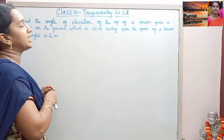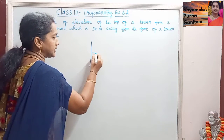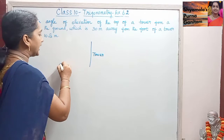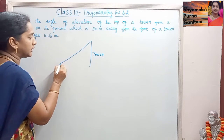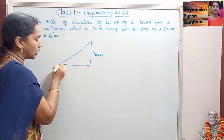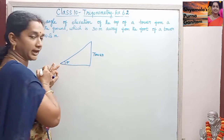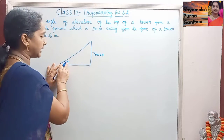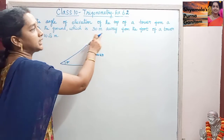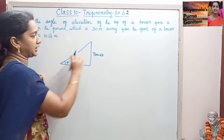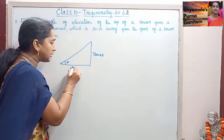So here, we need to find the angle of elevation of the top of a tower. A tower is there, and we are asked to find the angle of elevation from a point on the ground — I am taking it as theta — which is 30 meters away from the foot of the tower.